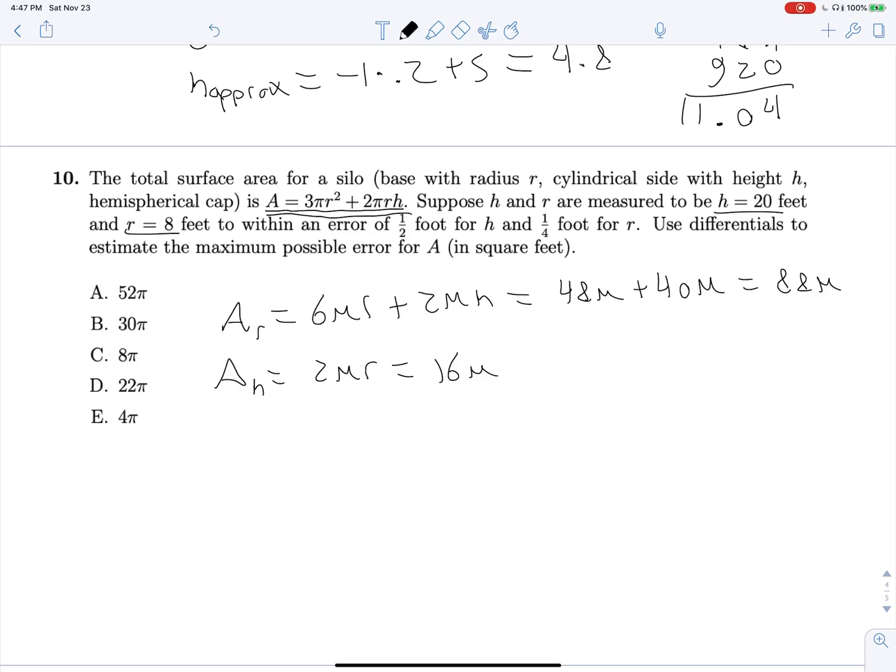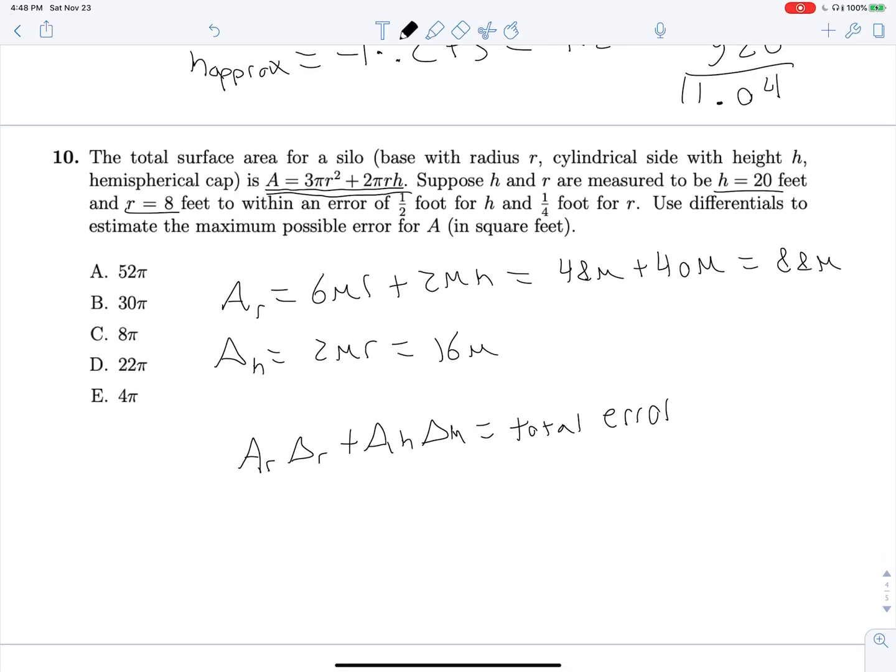And so, now all we need to do is take our A_R, multiply it by ΔR, and add A_H times ΔH. And that will be our total error. And it's not often that you see me doing something on here that I haven't done at least 5 or 10 times on my own. And this is one of those cases. I haven't done this question this way before. So it's exciting. I expect to get it wrong. So A_R is our 88π, and we are multiplying by our change in R, which is 1/4. And then we are adding our A_H, which is 16π multiplied by 1/2, which is our maximum error in H, or our ΔH. And solving this, this is going to be 22π plus 8π, or 30π. And there's our answer. And yeah, it's correct.